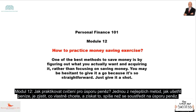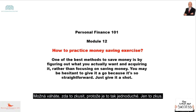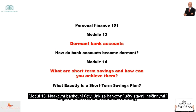Module 12 is about how to practice money-saving exercises. One of the best methods to save money is by figuring out what you actually want and acquiring it, rather than focusing on saving money. You may be hesitant to give it a go because it's so straightforward — just give it a shot.